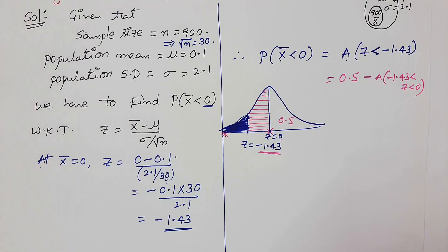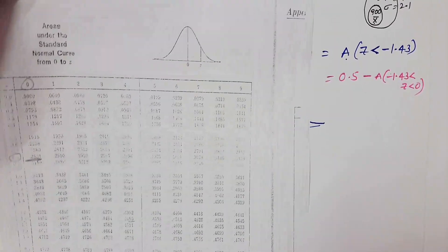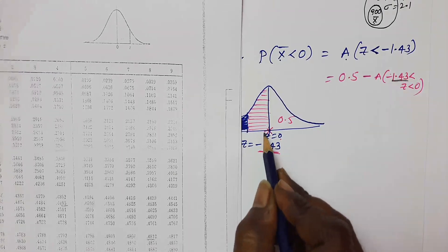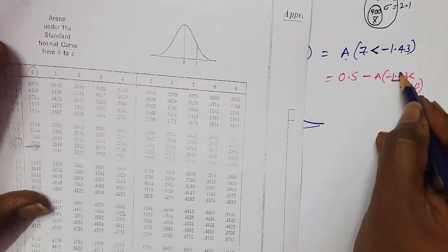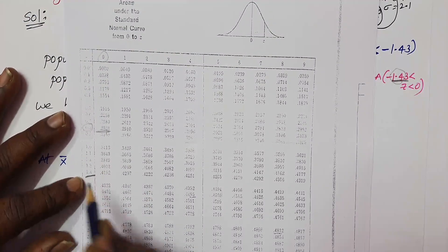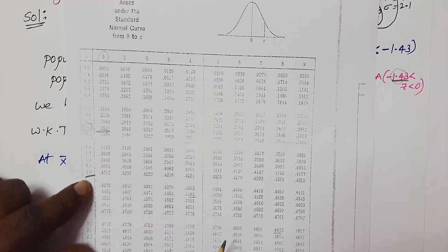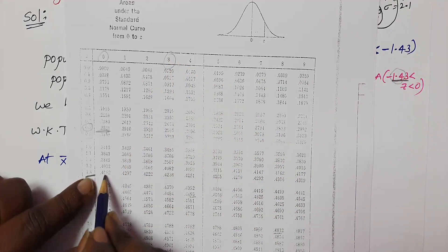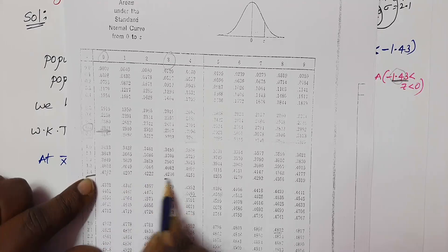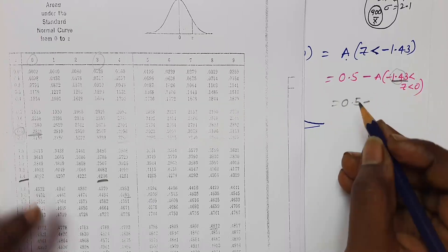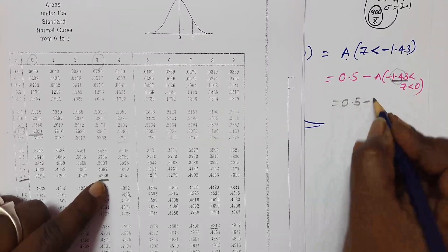I will use the table for 1.43 area. You can move row wise up to 1.4. This is 1.4, and the second decimal place is 3. Look at here, here we have 3. This one: 0.4236. So we have to subtract this area from 0.5.